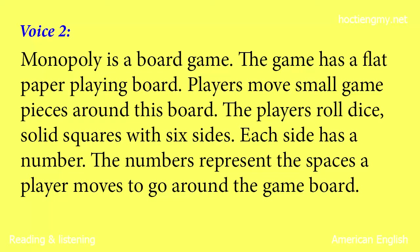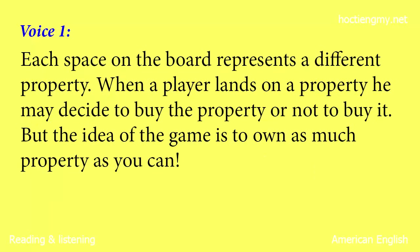Monopoly is a board game. The game has a flat paper playing board. Players move small game pieces around this board. The players roll dice — solid squares with six sides. Each side has a number. The numbers represent the number of spaces a player moves to go around the game board. Each space on the board represents a different property. When a player lands on a property, he may decide to buy the property or not to buy it.